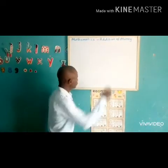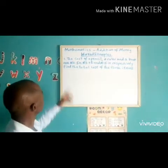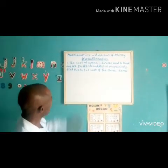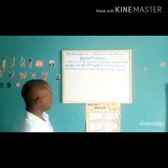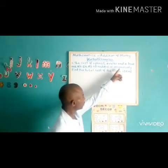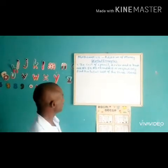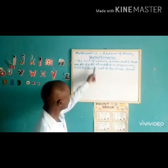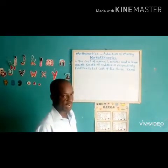We are now moving into worked examples. Example one: the cost of a pencil, a ruler and a book are two naira 50 kobo, three naira 5 kobo and 15 naira 1 kobo respectively. Find the total cost of the three items. When you hear the word 'respectively,' it means the first amount is for the first item — the pencil costs two naira 50 kobo, the ruler costs three naira 5 kobo, and the book costs 15 naira 1 kobo.